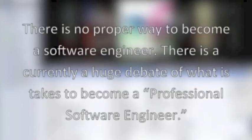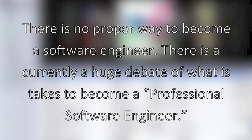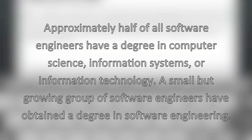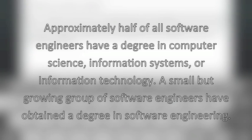There is no single proper way to become a software engineer. There is currently a huge debate on what it takes to become a professional software engineer. Approximately half of all software engineers have a degree in computer science, information systems, or information technology. A small but up-growing group of software engineers have obtained a degree in software engineering.